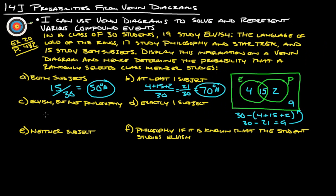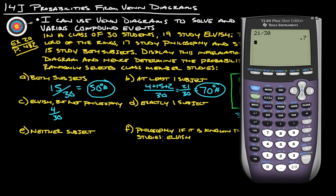Elvish but not philosophy. The number of people that do Elvish but not philosophy is those four out of 30. We calculate that, four divided by 30 gives us 13.3 percent.